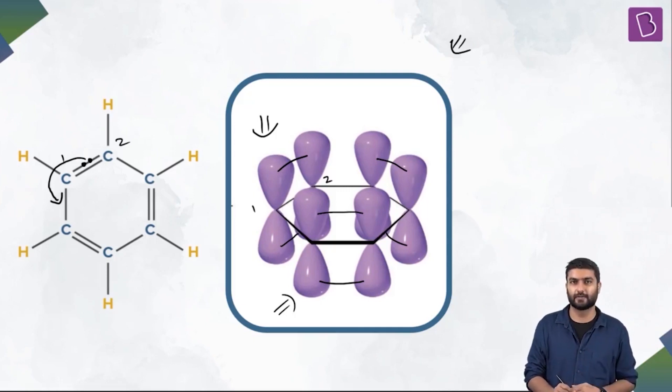So carbon is like, I'm already utilizing my p orbitals in bonding with the other carbon. So this carbon is like, hey carbon, you know what, I'm bringing both the electrons, you can let go of your electron contribution in your pi bond. So this carbon is like, all right, so if that's the case.